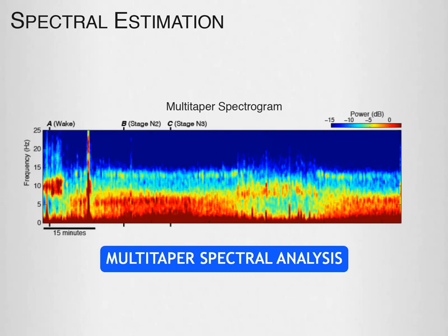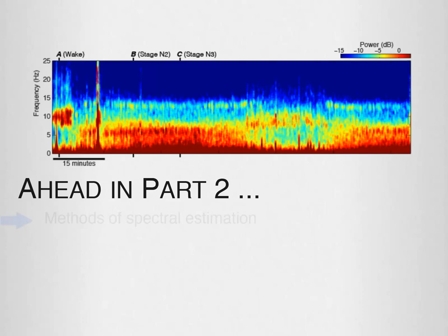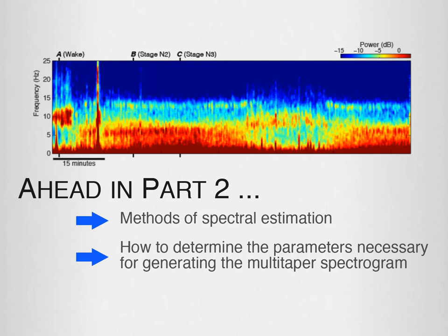That concludes part 1 of this series. In the next module, we'll look at methods of spectral estimation and why multi-taper spectral estimation produces a spectrogram with improved resolution. We'll also discuss how to determine the parameters necessary for generating the multi-taper spectrogram.